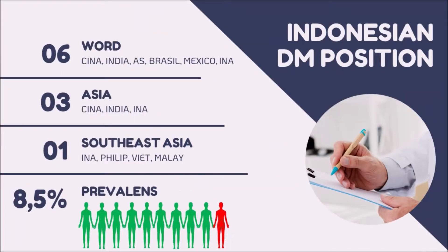First of all, I will explain why diabetes mellitus has been chosen as an important topic to discuss and why this topic is urgent for immediate solution. Diabetes is a major cause of relentless kidney failure, heart attack, stroke, and lower limb amputation. In a pandemic, a person who has acute diabetes can be detected as a comorbid.